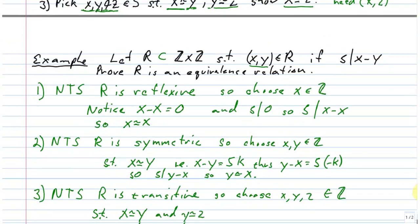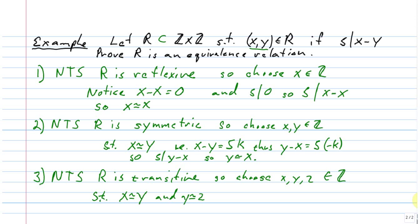Let's do an example similar to the homework problems. Define a relation as a subset of ℤ × ℤ, where ℤ is the integers. The relation is defined by: if the first element minus the second element is divisible by five, then it's an ordered pair in our set. For example, 0 and 5 are related, 15 and 75 are related, and more subtly, 3 and 8 are related. But 3 is not related to 2, because 3 minus 2 equals 1, which is not divisible by five.